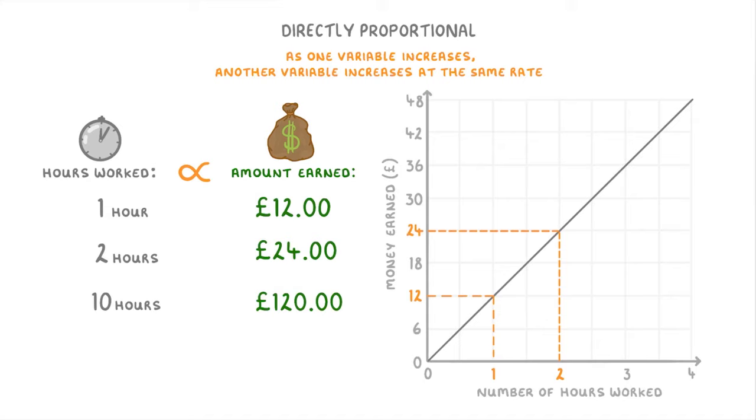And so we can use graphs like this to find out how much you would earn in any particular length of time. For example, if you worked three and a half hours, which we could show with this vertical line, then by tracing a line across to the y-axis, we can see that you would earn £42.